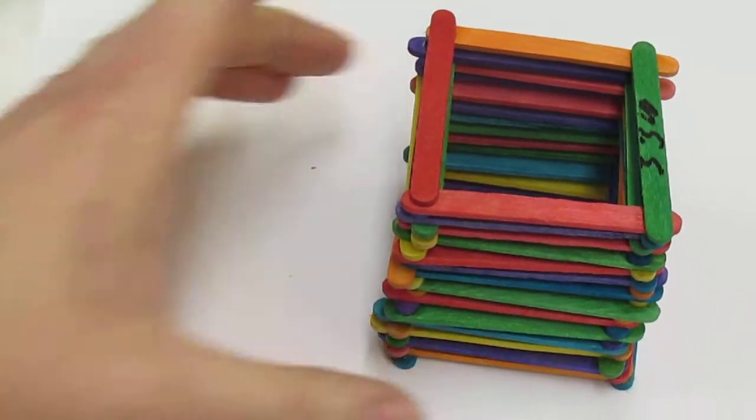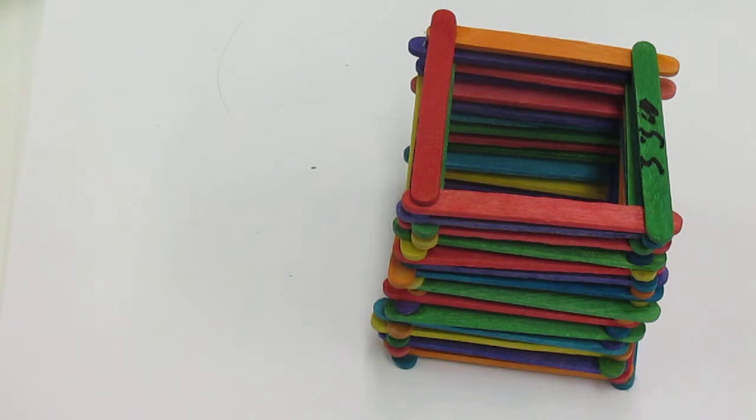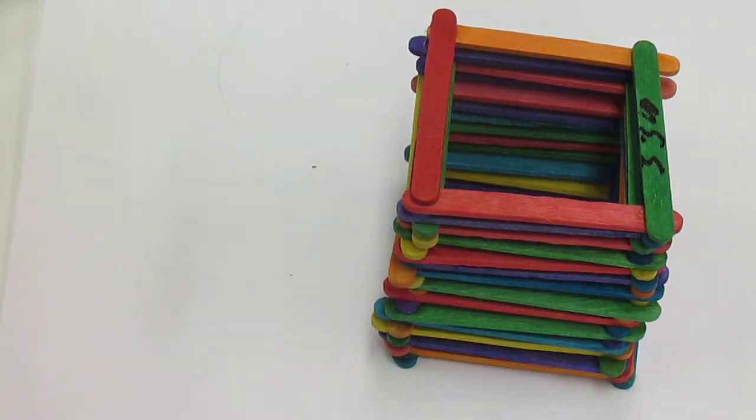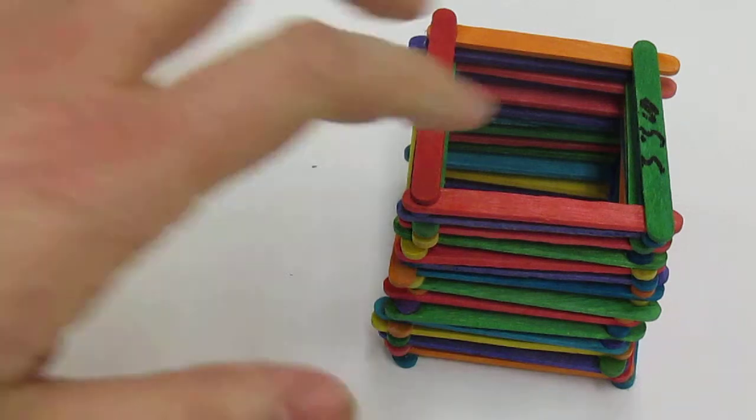Okay kindergarteners, today we're going to learn how to make our own little log cabin and we're going to be using these fantastic colored popsicle sticks. I'm going to teach you a pattern so you know how to build a nice strong house.